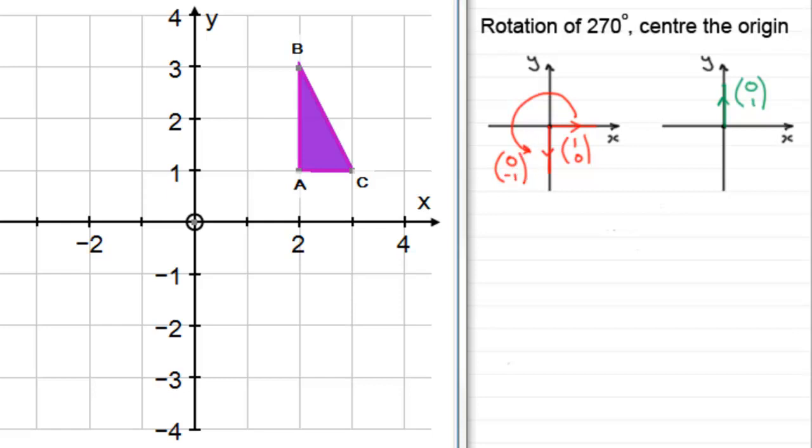And we do exactly the same with this vector here, the vector 0, 1. Imagine this is the hour hand pointing at 12 o'clock. Turn it anticlockwise, 270 degrees, 90, 180, 270 degrees. It's going to be pointing out in the 3 o'clock position. That vector is 1, 0.